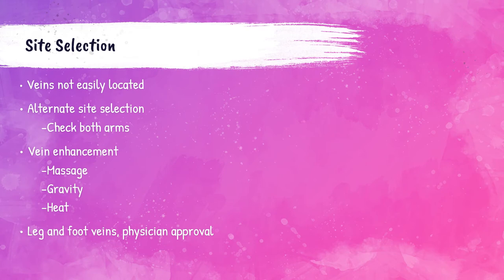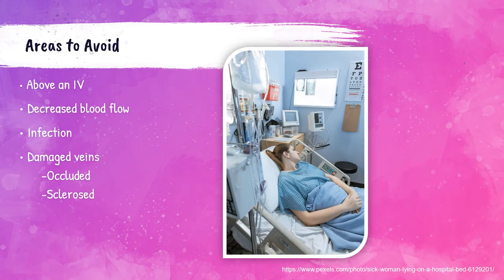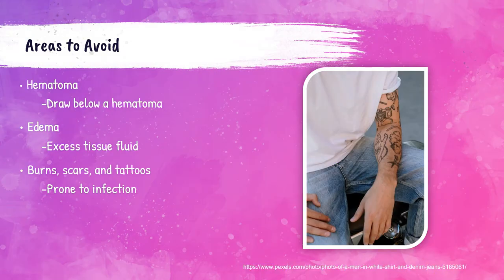Leg and foot veins can only be used with permission from the patient's physician. The phlebotomist should avoid the following areas for the venipuncture procedure: above an IV if the patient has one, as collecting above the IV leads to a contaminated sample and erroneous laboratory values; areas where there is decreased blood flow or any area where there is an infection. Occluded or sclerosed veins should also be avoided — occluded veins are those that are narrow, blocked, or compressed, while sclerosed veins are those that have collapsed and hardened. Phlebotomists should also avoid collecting blood from an area with a hematoma, edema, burns, scars, or fresh tattoos. A hematoma is a bad bruise caused by blood collecting under the skin, and edema is swelling due to tiny blood vessels leaking fluid.